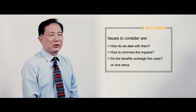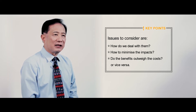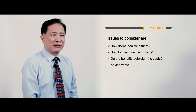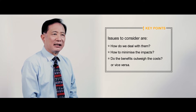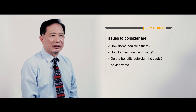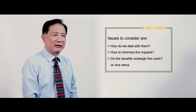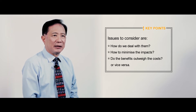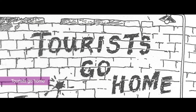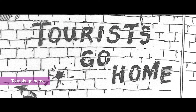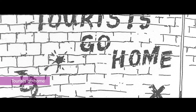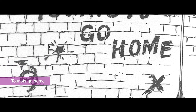If the benefits do outweigh the costs, then it's likely that people and the community will have positive perceptions. On the other hand, if the costs outweigh the benefits, then people are likely to develop negative perceptions and opinions — like the sign that says 'Tourists go home.' Is this what you want to see in your community? Certainly not.